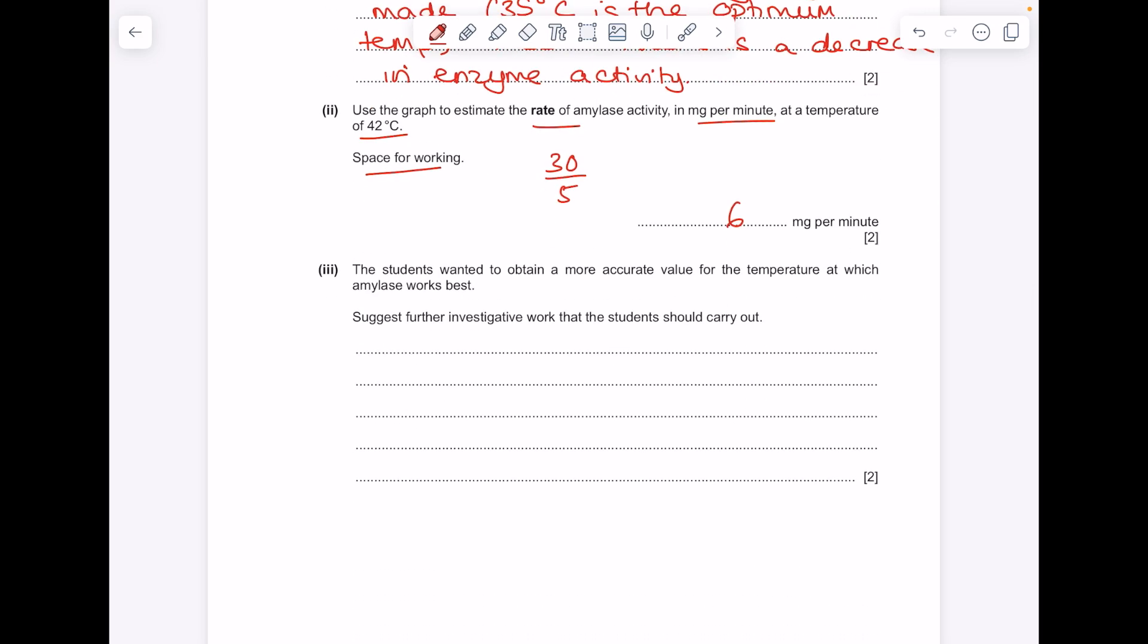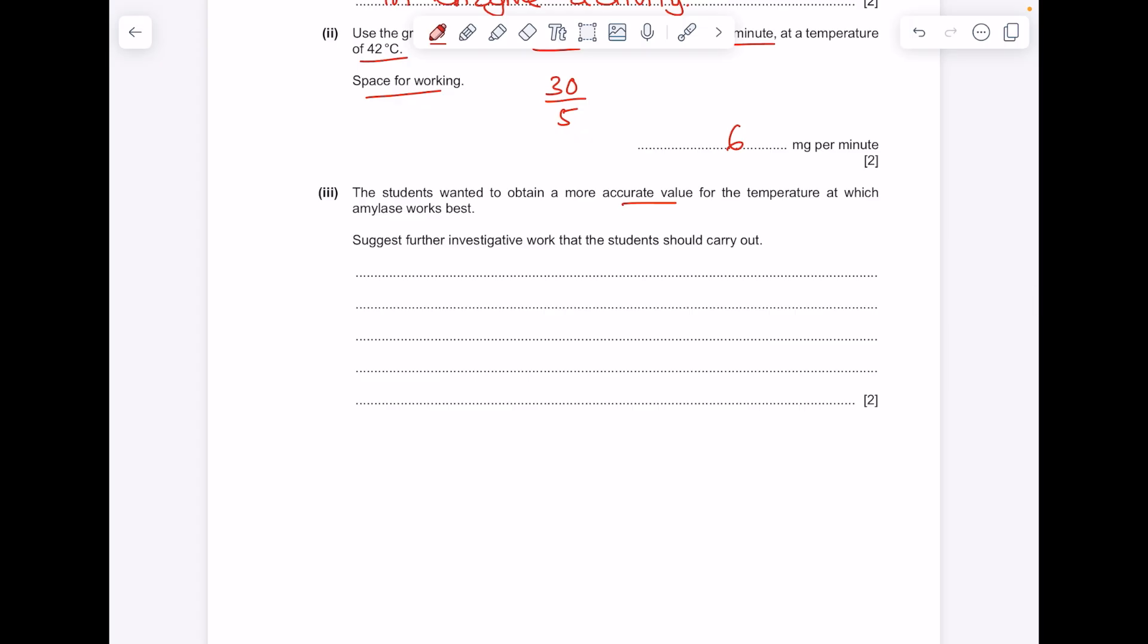The students wanted to obtain a more accurate value for the temperature at which the amylase works best. Suggest further investigative work that the students could carry out. If you want a more accurate value, you just need to carry out more experiments. So test at a smaller interval of temperatures.